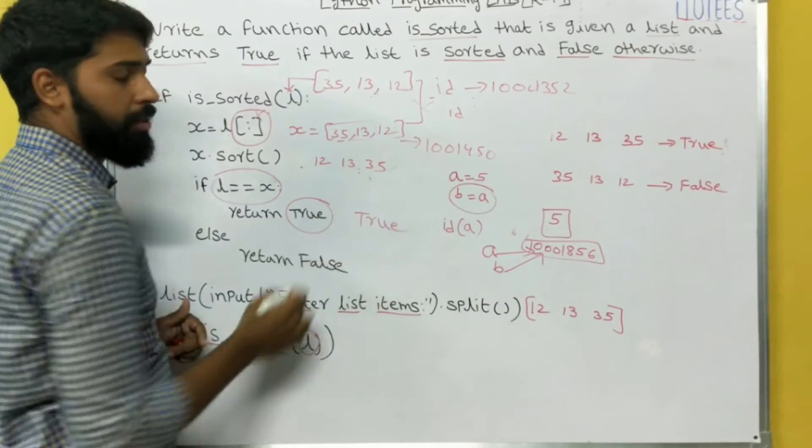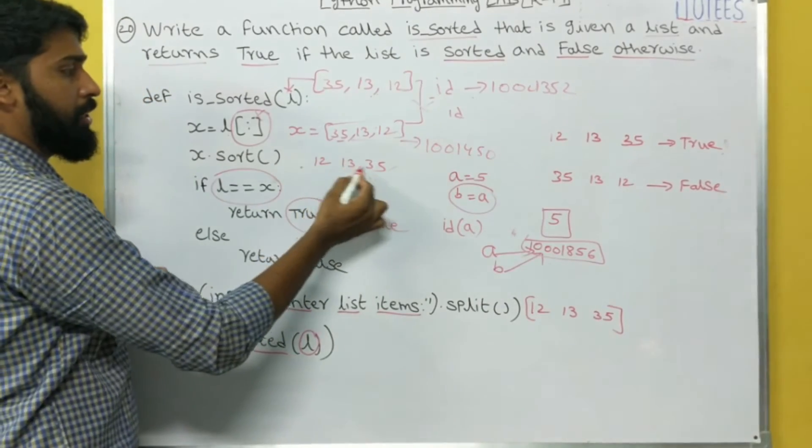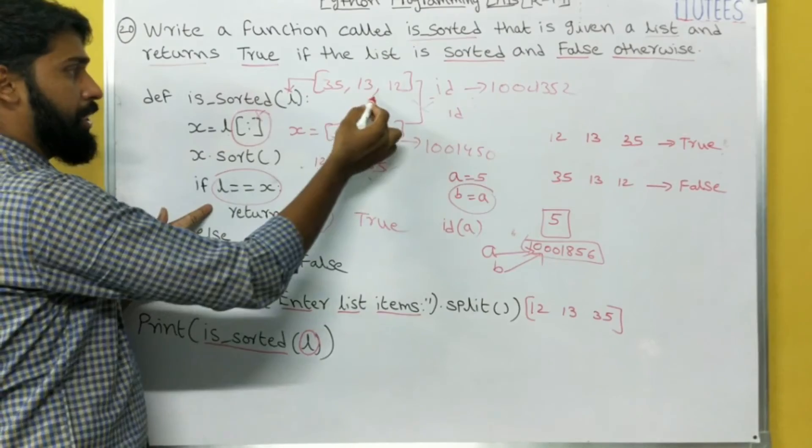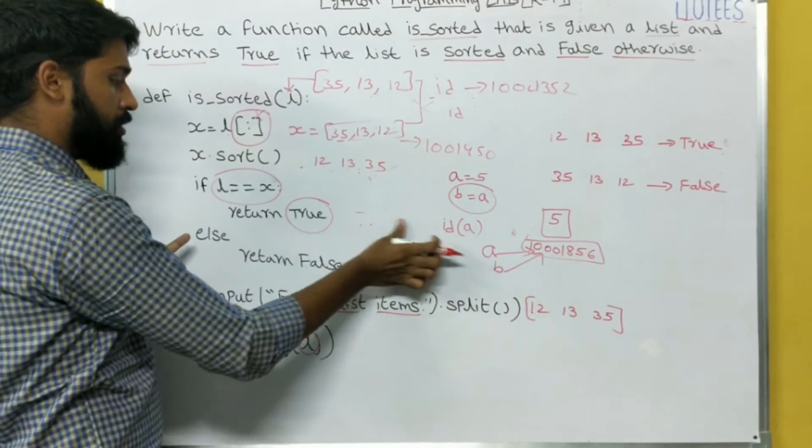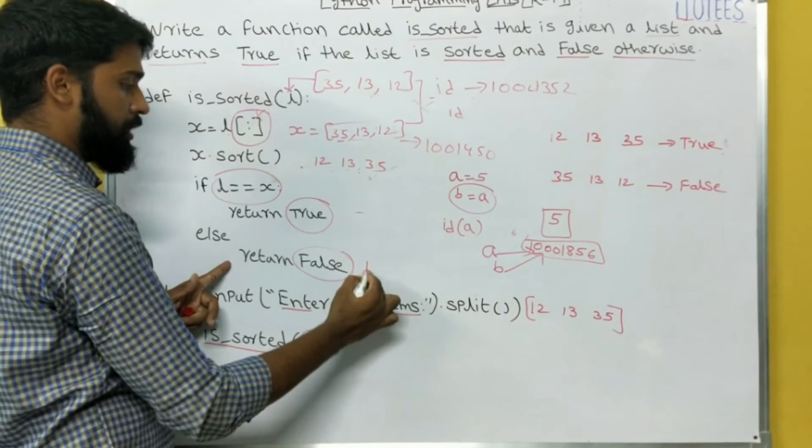So now X dot sort. What is the X dot sort? 12, 13, 35. Now you can check 12, 13, 35 equals equals to 35, 13, 12. No. So in this case, it returns False.